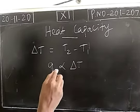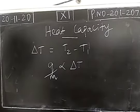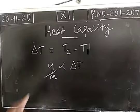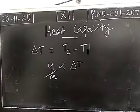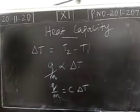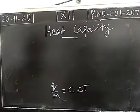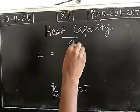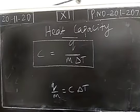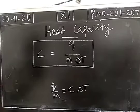At the same time, temperature change is inversely proportional to the mass. So the change in temperature is directly proportional to the heat absorbed and inversely proportional to the mass of the substance. To remove the proportionality, we introduce a constant called C. Then C is equal to Q divided by m·delta T. This constant C is called the heat capacity.